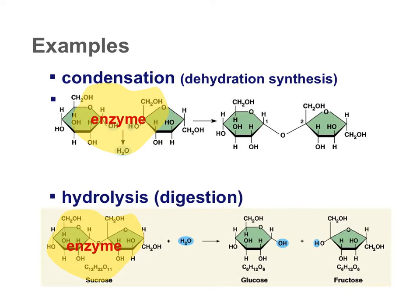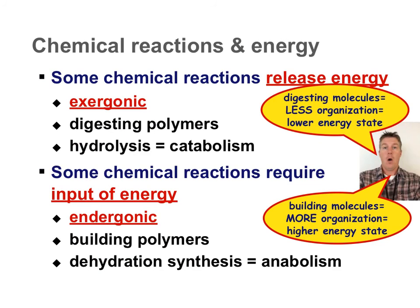A more complex look: condensation is also known as dehydration synthesis. Dehydration means a water is coming out, and we're going to build more complex molecules from simpler molecules. Hydrolysis, or digestion, is where you tear down molecules by adding water, splitting them into their component parts. By looking at these two examples, which one do you believe has products more organized than the reactants, and in which one are the products less organized than the reactants? Some chemical reactions release energy, and some require energy.